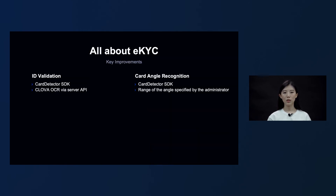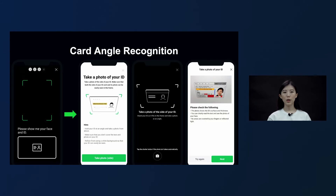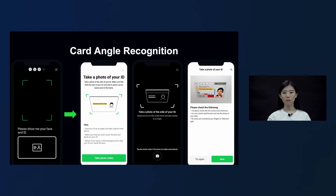Second, we also added the card angle recognition feature. In the case of the external SDK where an ID card had to be placed beneath a face, the instruction was not clear for the applicant, so in many cases the thickness of the ID was not photographed or a video showing the front side of the ID was submitted. To solve this issue, we changed the process so that when the applicant tilts their ID to take a photo, the card detector SDK detects the angle, and the photo is taken automatically only when the detected angle falls within a range preset by the administrator.